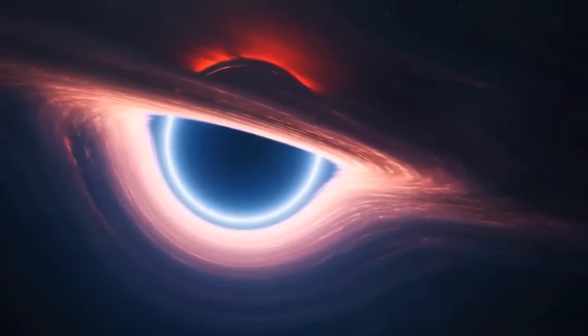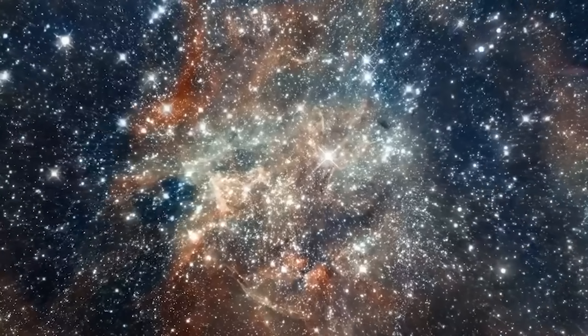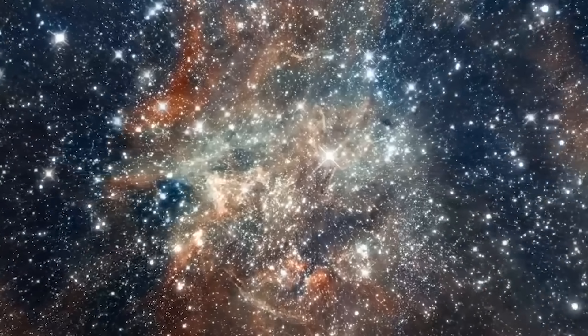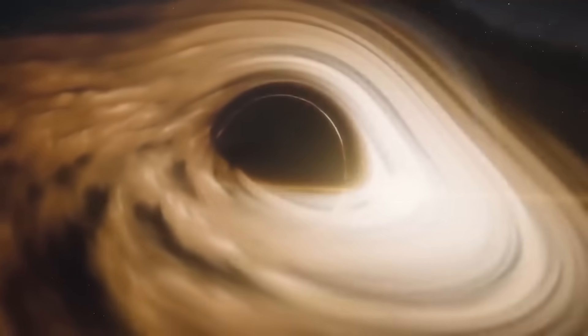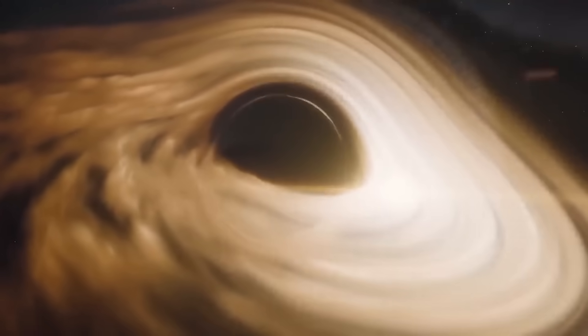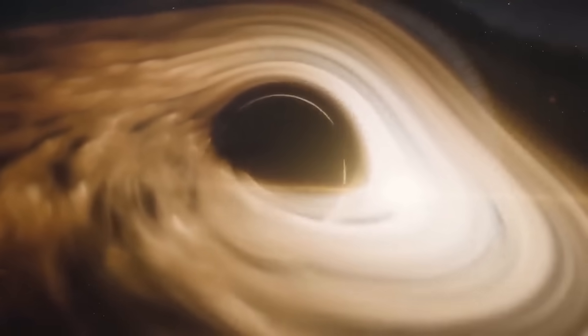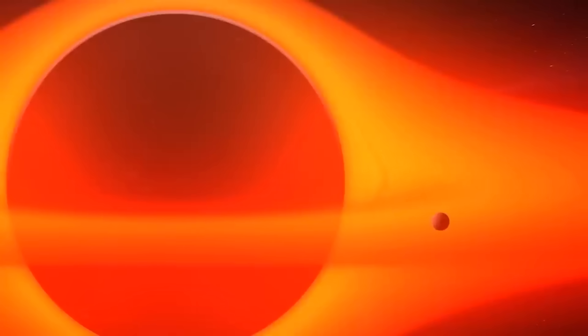Another theory proposes that black holes could have formed even before the first stars. Under certain circumstances, rotating dust disks that had the potential to form stars could collapse directly into black holes. This would imply that black holes existed prior to the emergence of the first stars.